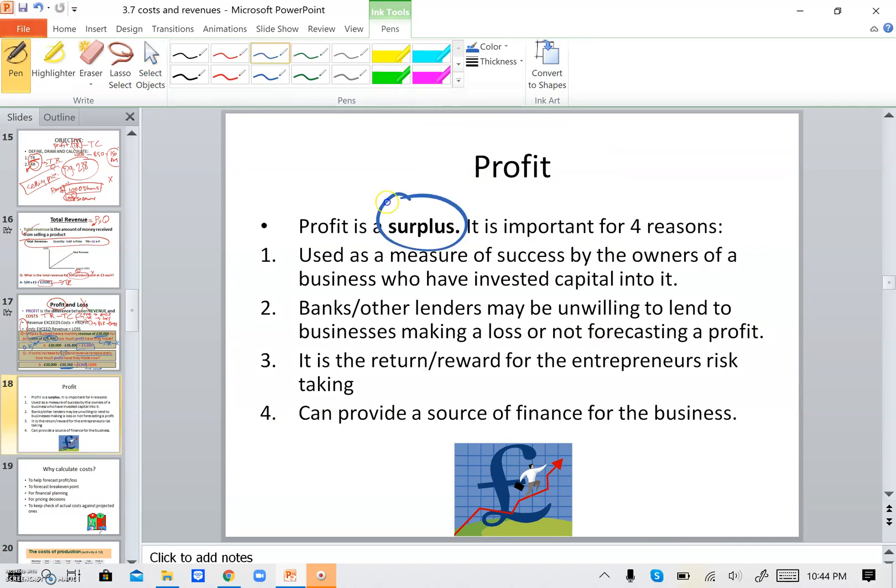So as you can see, profit is a surplus. It's an extra. It is important for four reasons. Why is profit important? Because it is used to measure the success of the owner. So if we are always getting a positive answer when we are subtracting the total cost from total revenue, it means it was a success for the owners. Banks, when they want to lend you money, if they find out that you are having a surplus, definitely they will give you money. They will lend you money. They will give you a loan. If your business was losing, no, they will not do that. And it is the return or the reward for the entrepreneurs. And also, it could provide a source of finance for other businesses.